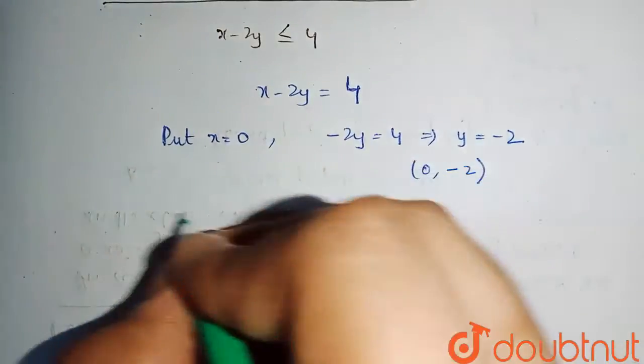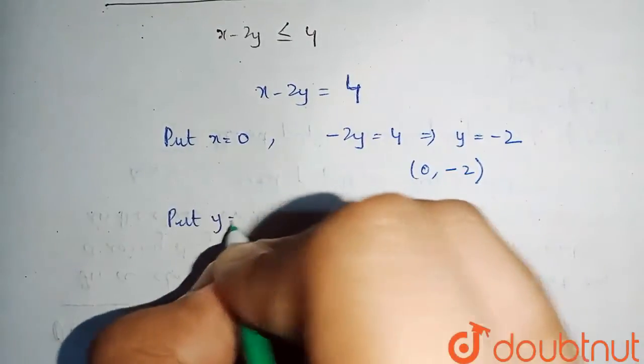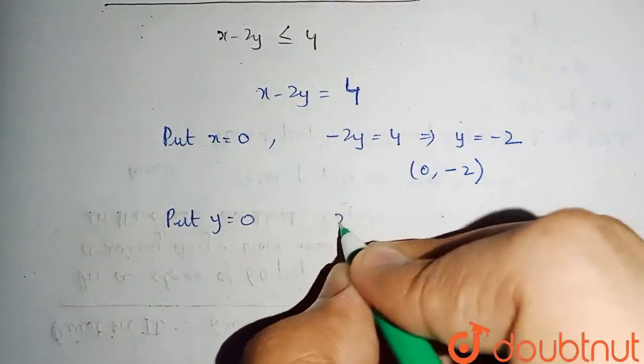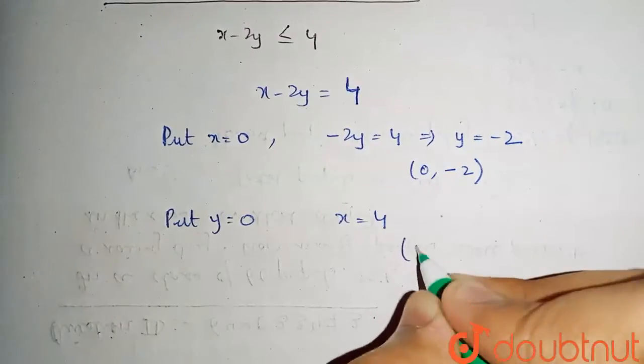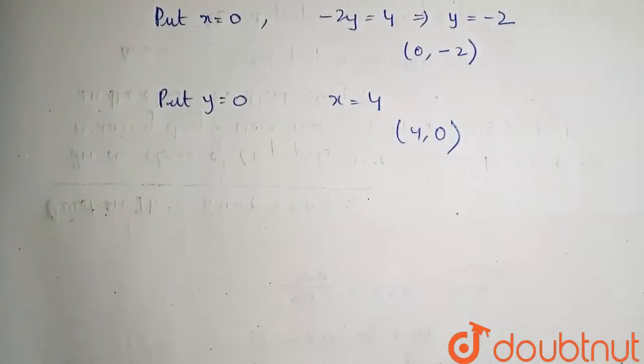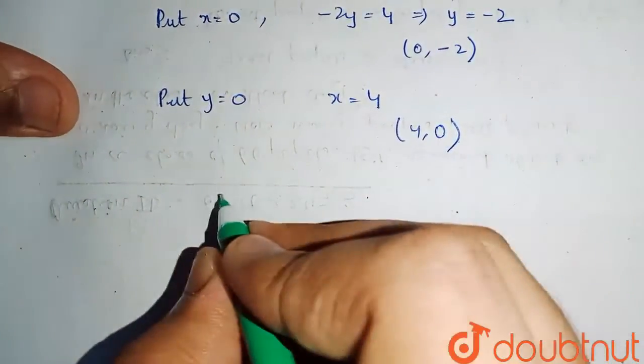And second point would be putting y equals to 0. On putting y equals to 0, we get x equals to 4. So the point we get is 4, 0. So these are the two points so that we can plot a line now.